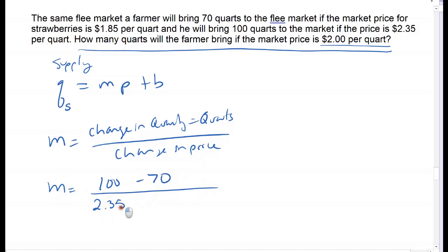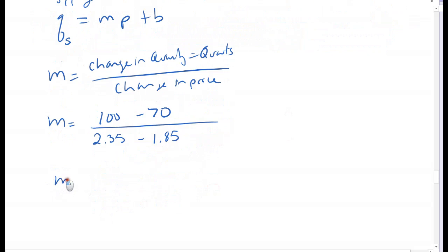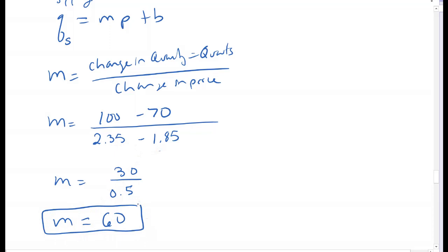The price with 100 quarts was $2.35, and the price for 70 quarts was $1.85. So the change in price is $2.35 minus $1.85 equals $0.50. So slope is 30 divided by 0.5, which equals 60. That positive slope confirms it is my supply equation—supply is always positive.